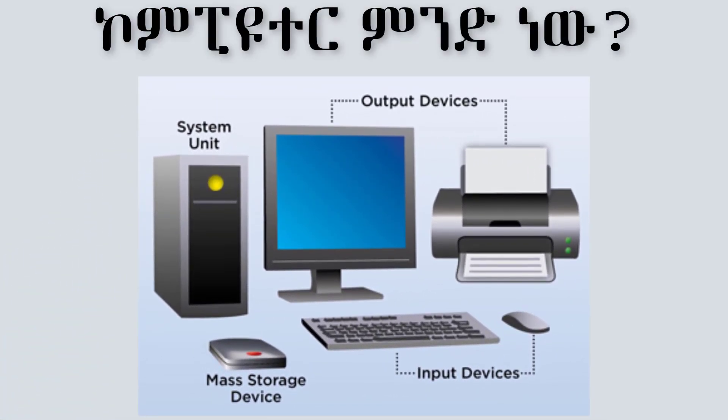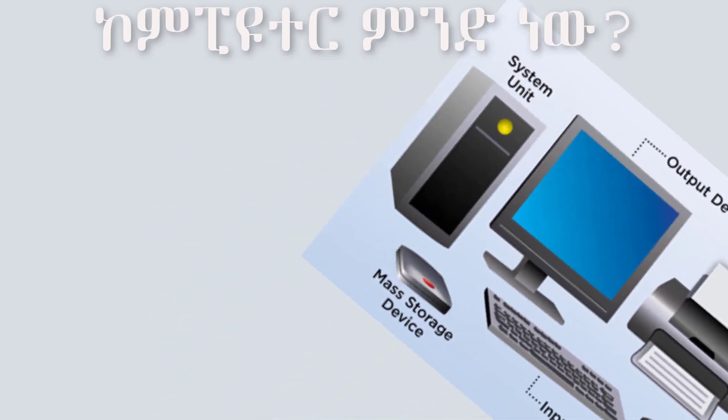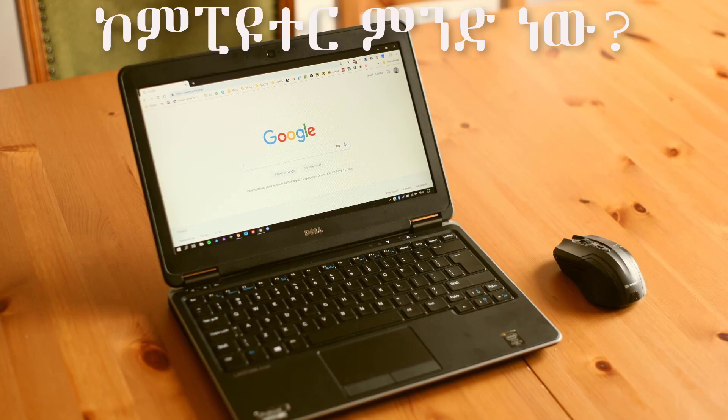The computer is on the left, but the computer is on the left and the computer is on the right side. If you ask this computer, you can imagine the computer on the left and the right side. If you want to use the medium level, you can use your computer to revise and update your data. Then you can use the advanced version of your computer.